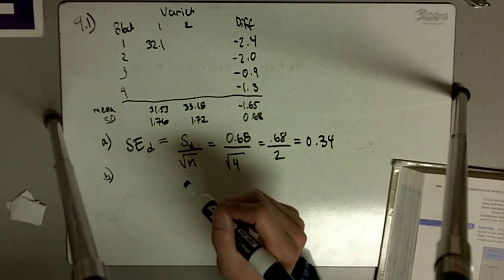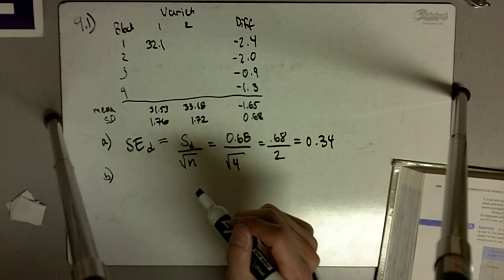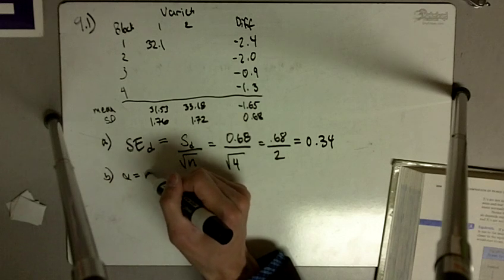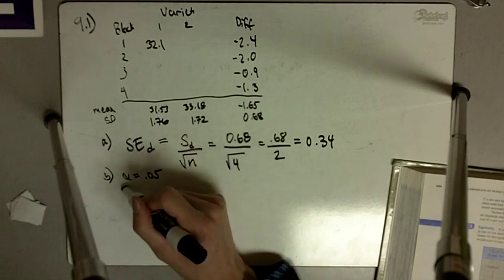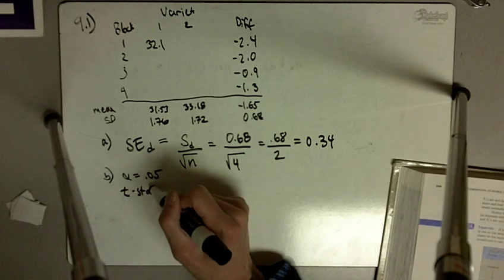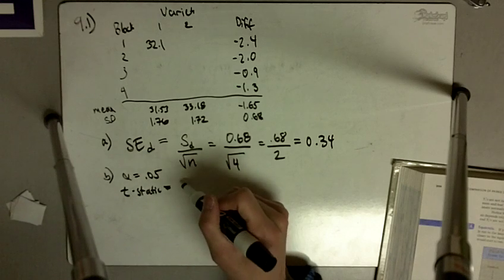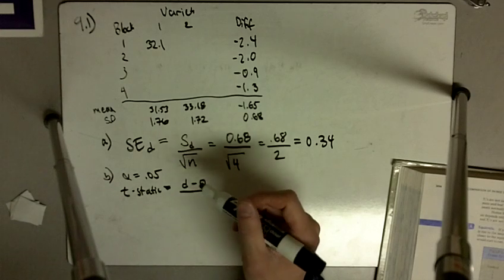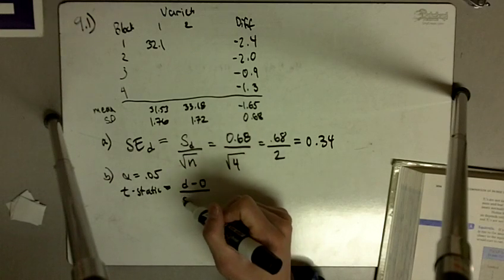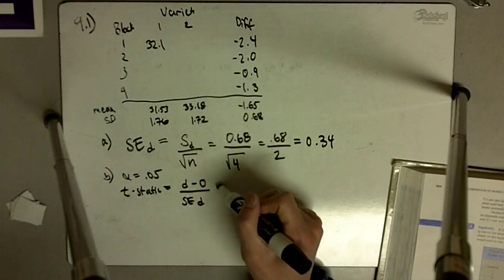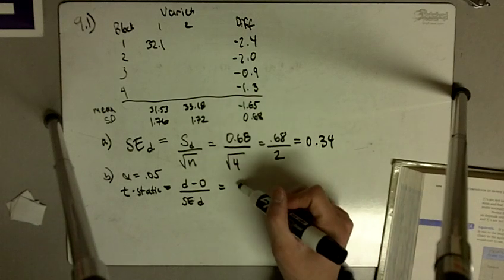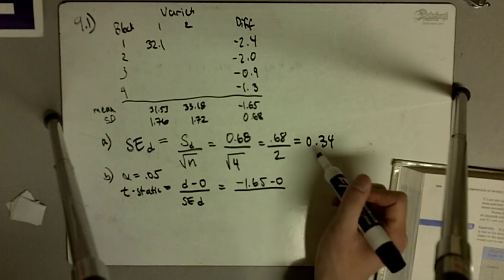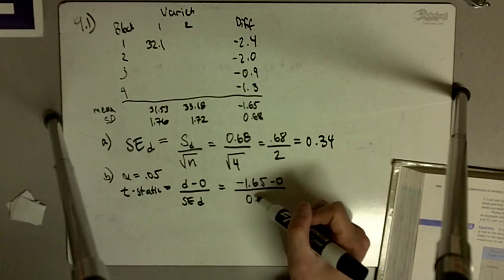Part B says: test for a difference between the varieties using a paired t-test with alpha equal to 0.05. For our paired t-test, the t-statistic is going to be our mean difference minus 0 divided by the standard error of the difference. In this case, that is going to be negative 1.65 minus 0 divided by the standard error of the difference, 0.34.